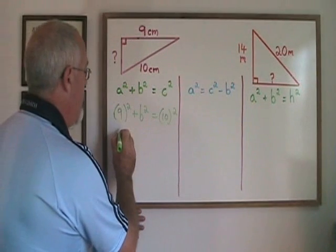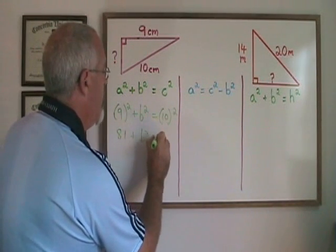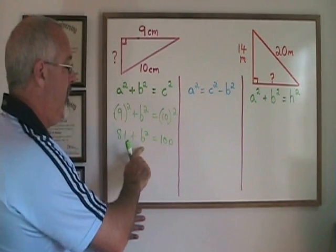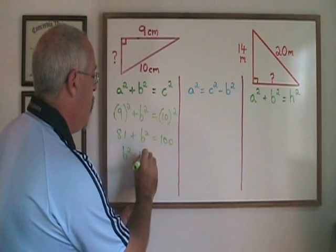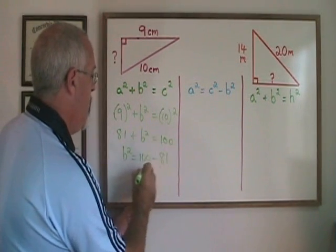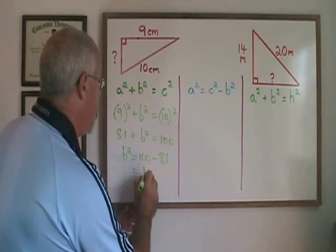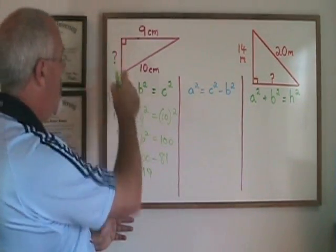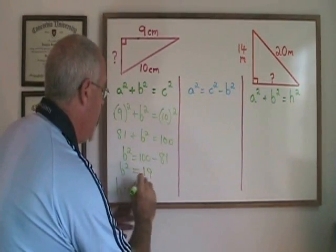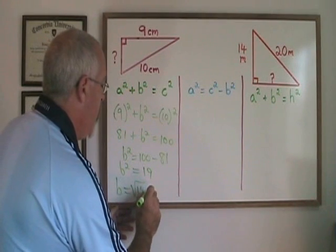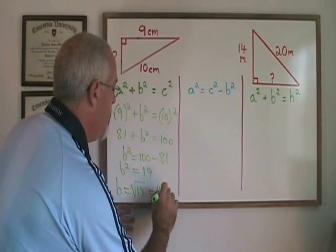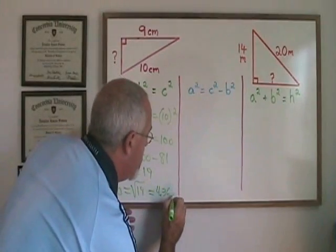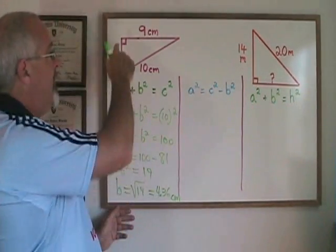If I square my 9 and my 10 I get 81 plus B squared equals 100. Now I want to isolate my variable. B squared stays where it is and will be equal to 100 minus 81. 100 minus 81 is 19, so B squared is equal to 19. B, the length of this side, is equal to the square root of 19, which is 4.36 if I round it to the nearest hundredth. And the unit of measure was centimeters, so it is 4.36 centimeters. We have found the length of this side.